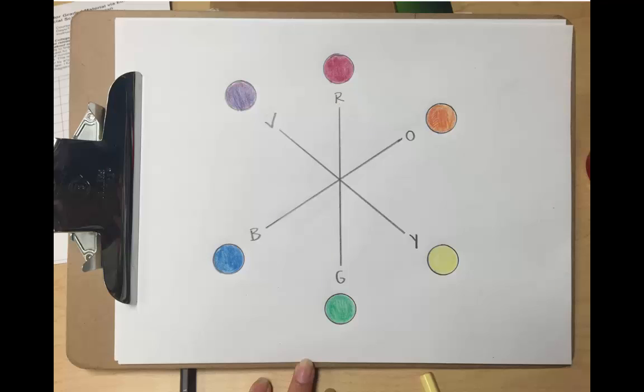The secondary colors are between the primary colors. If you look on either side of a secondary color, you will know which primary colors were used to make it. I went ahead and placed orange, purple, and green on the color wheel.